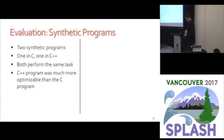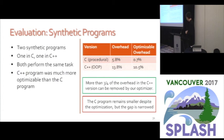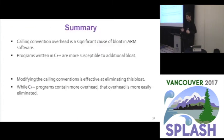We also tried this on the synthetic programs we created — those same idiomatic C and C++ programs doing the same tasks — and again we were able to remove a lot more of the overhead in the C++ program than the C program, giving us extra confidence that C++ programs are more easily optimizable in addition to having more overhead to start with. That's my presentation. I'll happily take any questions.